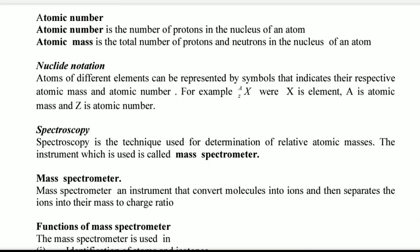Nuclide notation of an atom: atoms of different elements can be represented by symbols that indicate their respective atomic mass and atomic number. For example, if we write X, then we have A on the top left corner and Z on the bottom left corner. X is an element, A is atomic mass, and Z is atomic number.